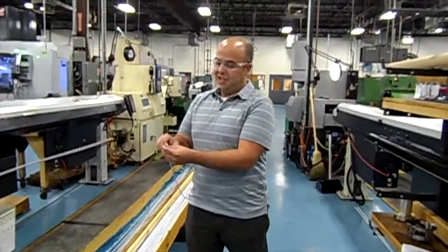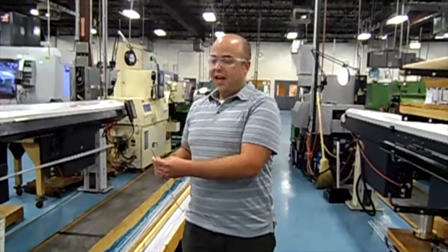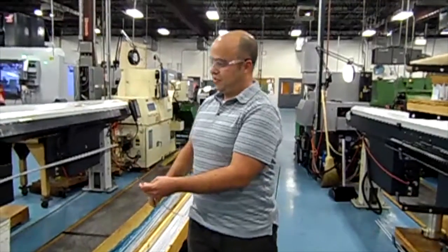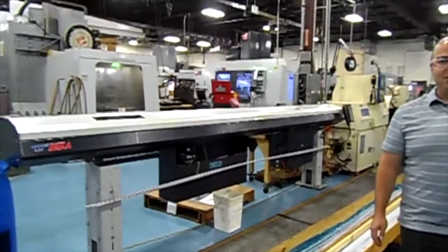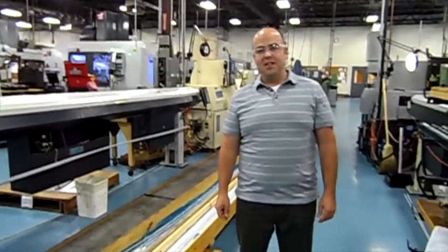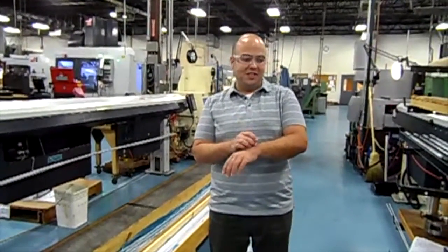We begin with a very tight tolerance bar that's very round and true, and the first operation begins in our Swiss machines. Our Swiss machine is used for high volume parts and precision parts like gears and rings that were initially used in watches.